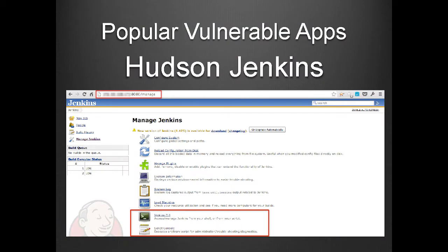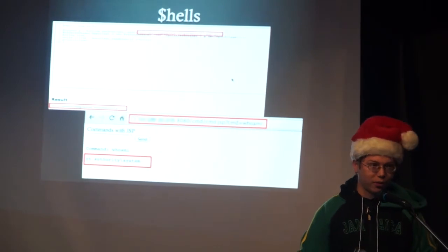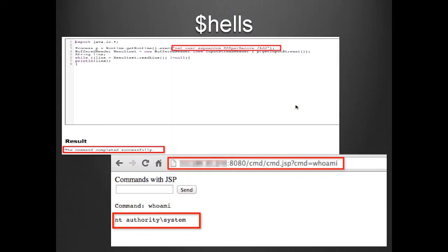There's also Hudson Jenkins, which is a build automation tool. They were nice enough to give you an easy way to pop the box — the two highlighted links are just links you click to run Java or Groovy, typically unauthenticated. You didn't even need to upload the shell; they're just like, here, take it. The first window at the top is the Hudson Jenkins script console where you drop your Java/Groovy scripting in and go. The bottom one is the Ludanium script shell for either JBoss or Tomcat.